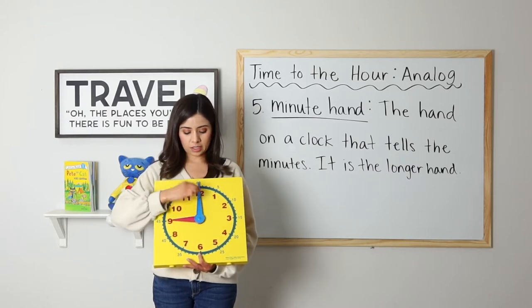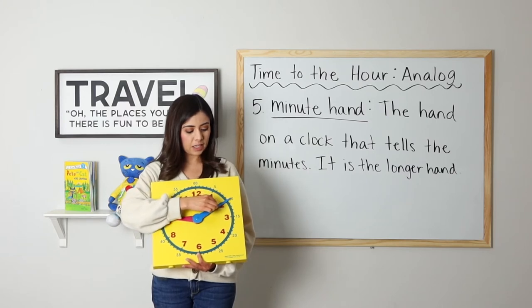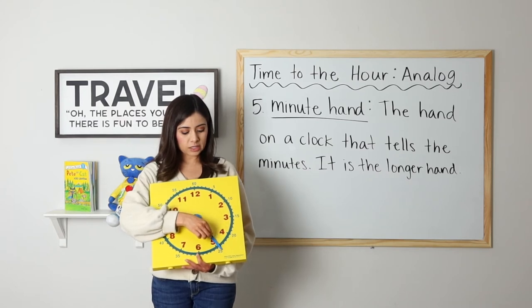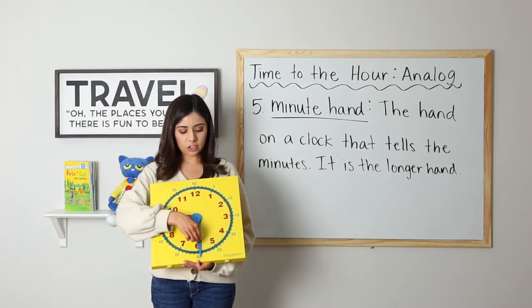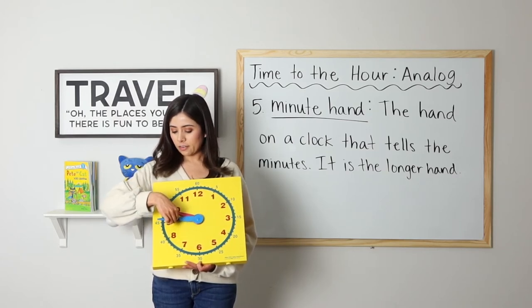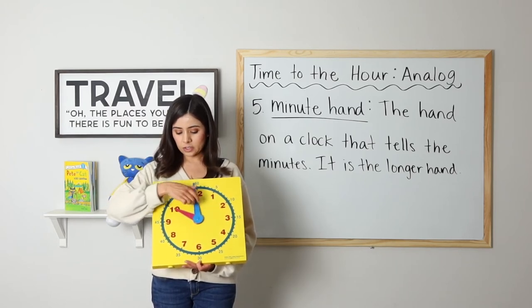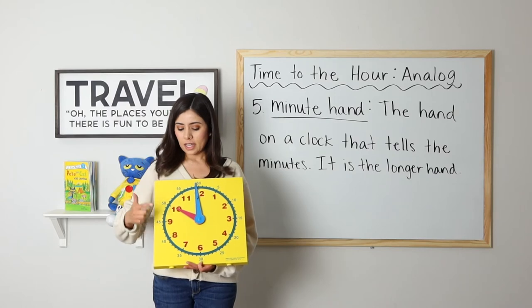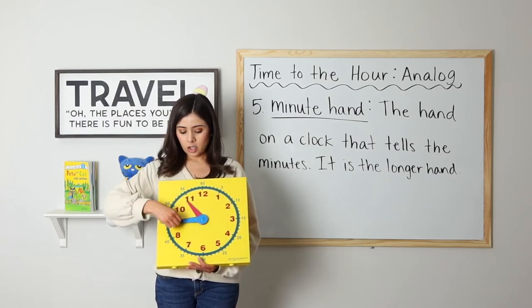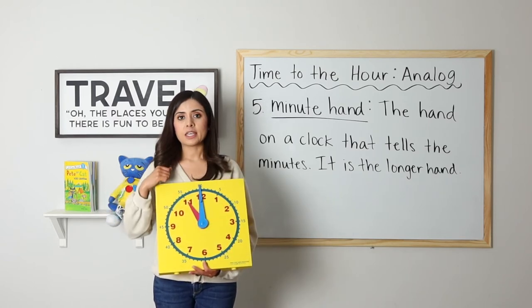So if it was nine o'clock here, over here would be 905, 910, 915, 920, 925, 930, 935, 940, 945, 950, 955, and that's when a new hour would start. As you can see, as this moved around, my hour hand went to the next hour because 60 minutes is one hour.